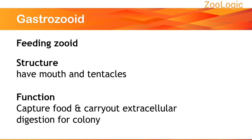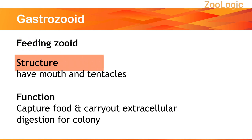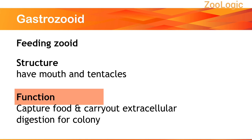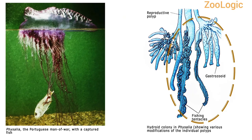Gastrozoids are known as feeding zoids or feeding polyps. Structurally, they have a mouth and tentacles and resemble Hydra. They are involved in capturing food and carry out extracellular digestion for the whole colony, while intracellular digestion and absorption occurs throughout the colony since the gastrovascular cavities are continuous. On your screen, you can observe two images — first showing Physalia, a hydroid colony with a captured fish through its gastrozoids, and the second demonstrating structural modifications of gastrozoids with fishing tentacles. With the help of these tentacles with numerous nematocytes, it captures its prey for the whole colony.